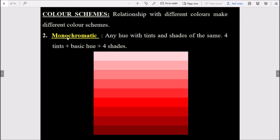Next is monochromatic. Mono means single, chromatic means color. So when we take the tints or shades of any single hue, that forms a monochromatic color. For example, I've taken red here. From red, we keep adding white to make it lighter, or here we add black to make it darker. So this is a monochromatic color scheme.